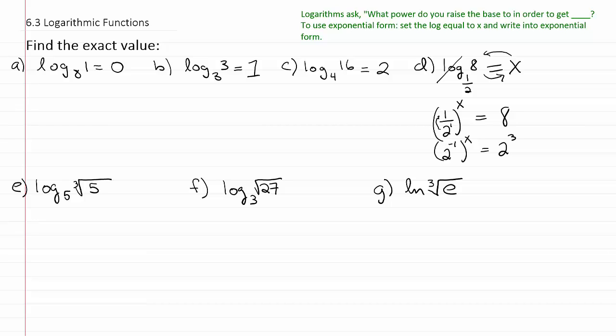And from there, we basically can go on to say that if I multiply these two exponents together, the negative 1 and the x, I'll have 2 to the negative x power is equal to 2 to the 3rd. And once we have the common base for the two terms, we can then drop the base and just say the exponents must be equal.